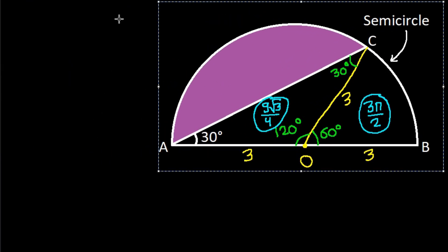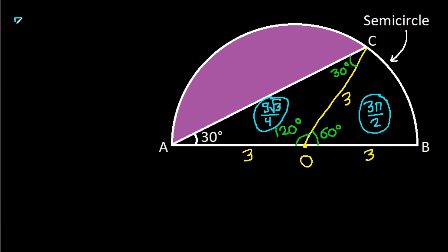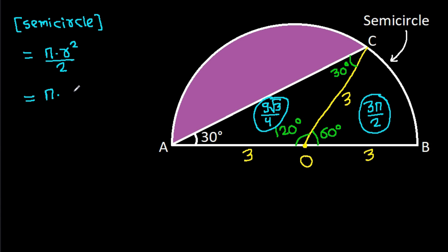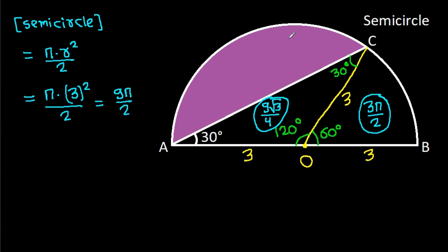Now, the area of the semicircle is pi times radius-squared over 2, which is pi times 9 over 2, so the area of the semicircle is 9 pi over 2.